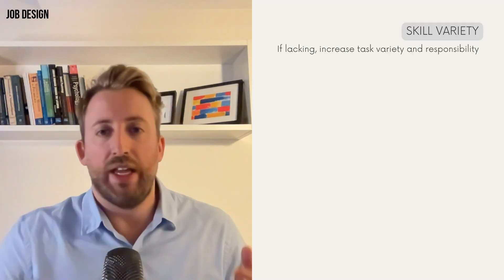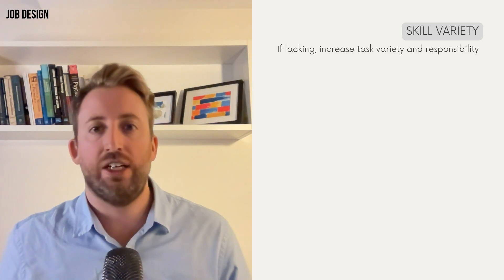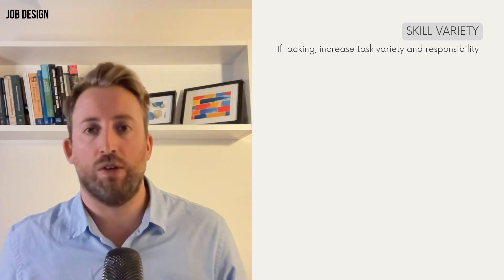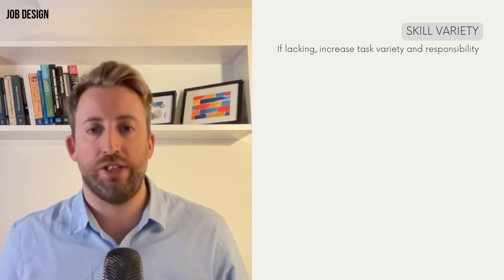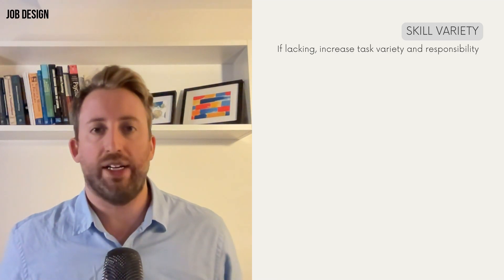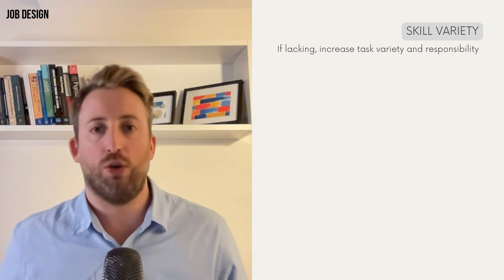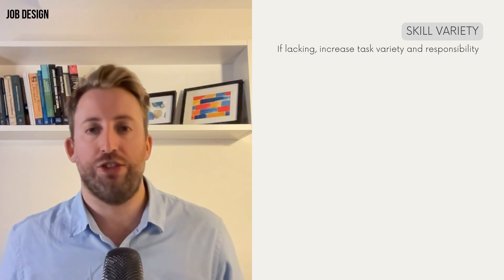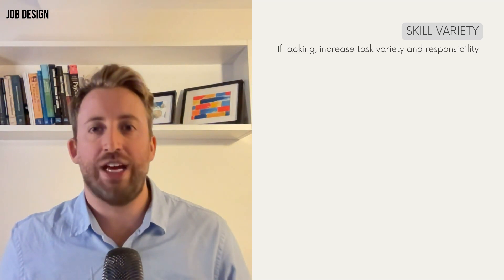The job characteristics model also offers practical suggestions for addressing gaps in the core job dimensions. If there's a gap in skill variety, increase task variety and give people more responsibility so they're more engaged in their work. For a retail sales team member, this could mean empowering them to handle more tasks — such as merchandise displays, inventory management, or customer relationship management — which diversifies their role, keeps them engaged, and reduces the monotony of repetitive tasks.